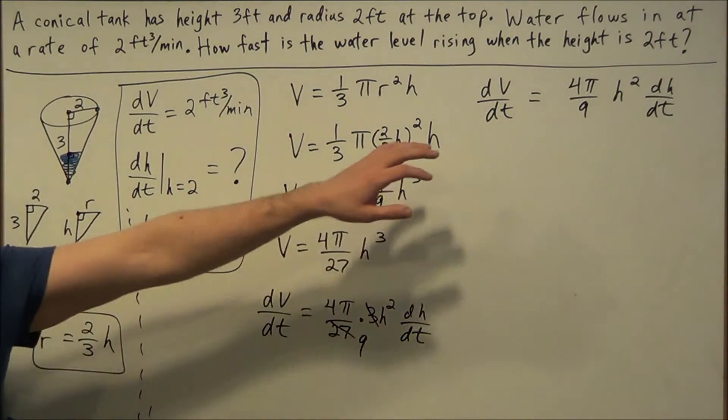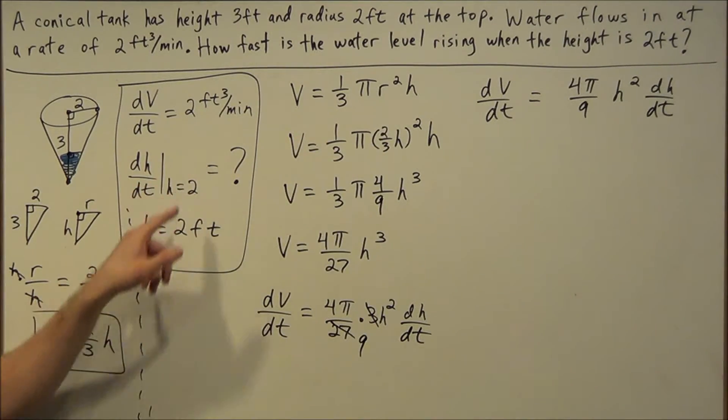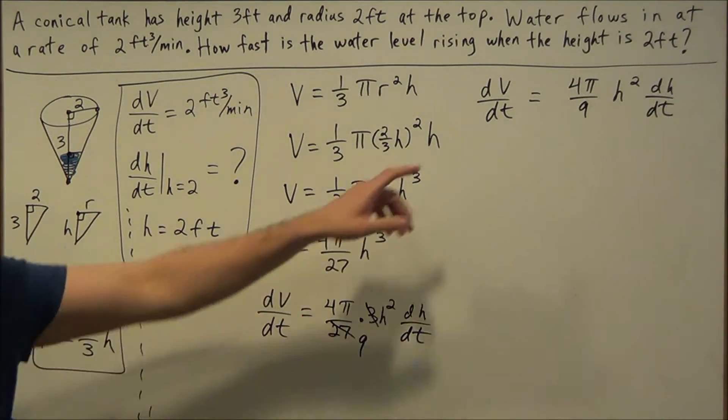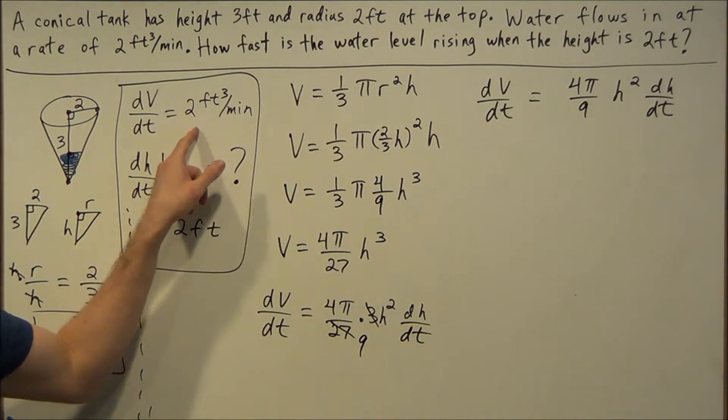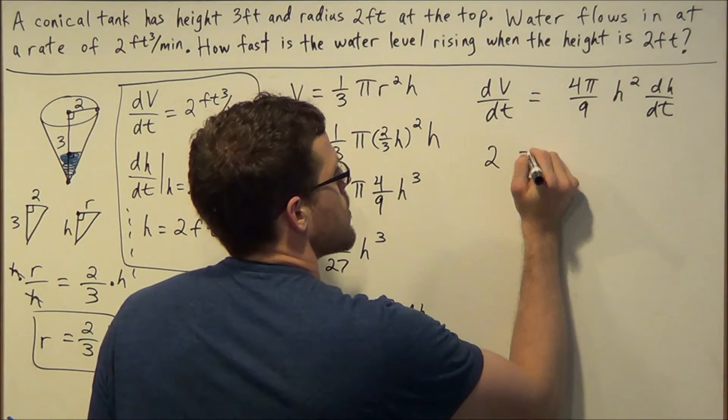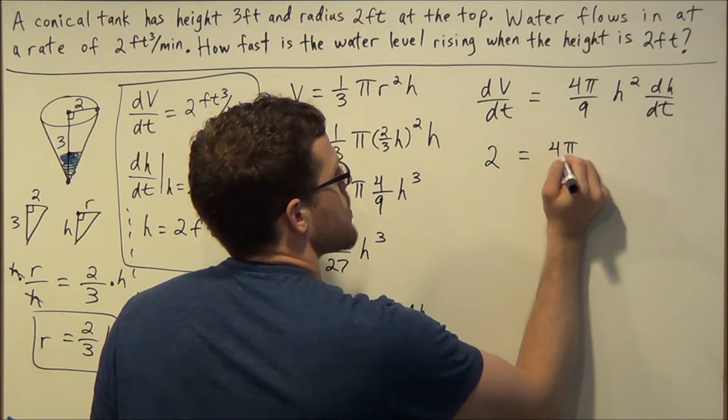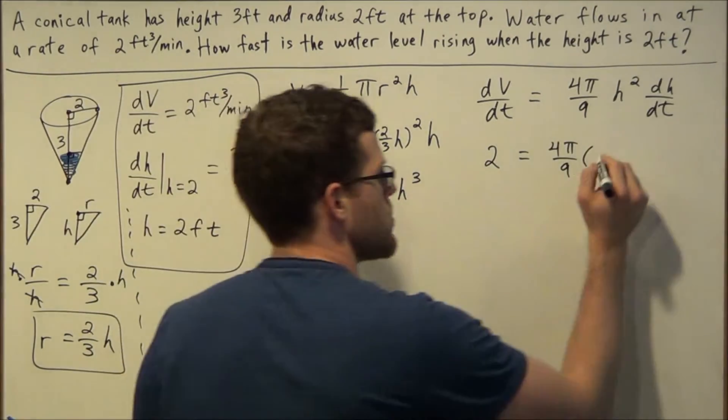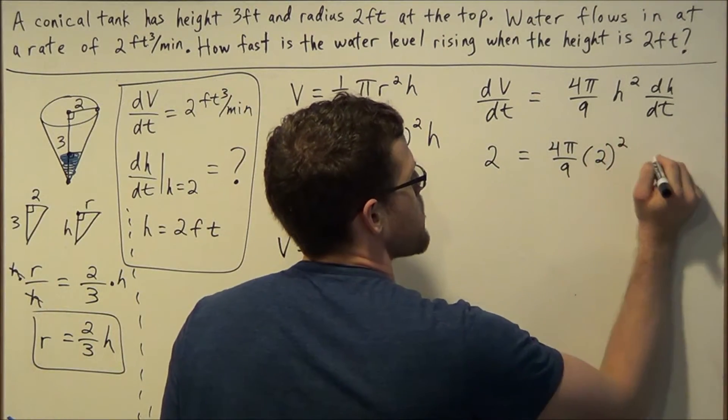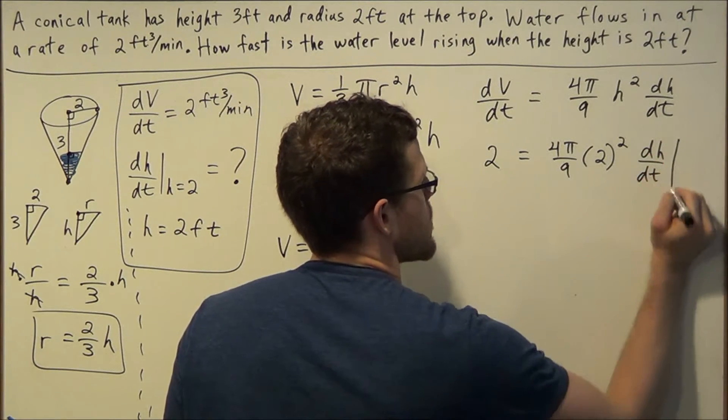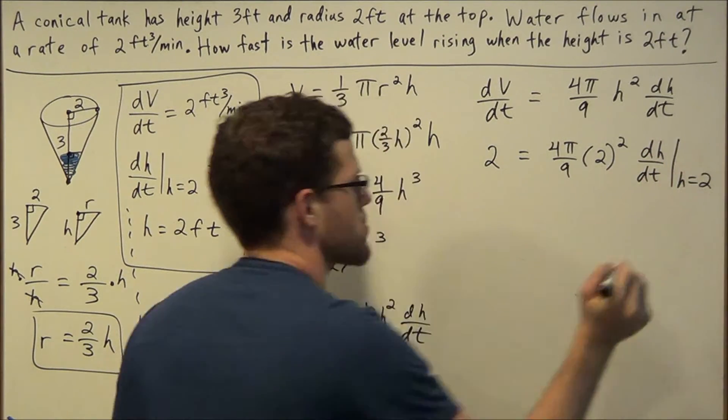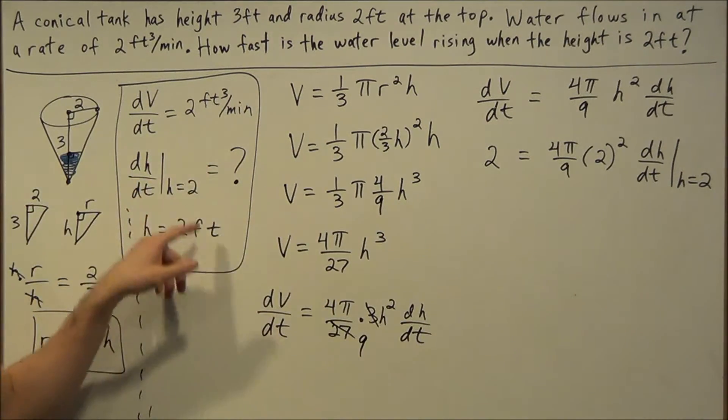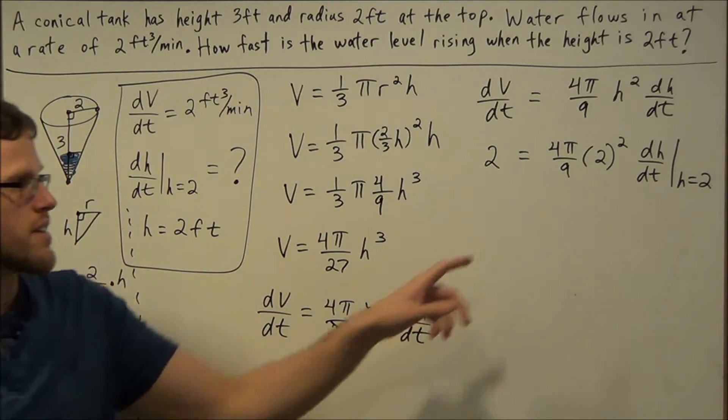At this step, now we're getting ready to solve this. All we have to do is just plug in the information that was given to us. We're going to wait to the end to write all the units out just so everything doesn't get cluttered. So dV/dt we could replace with 2. We'll have (4π/9), h is equal to 2 feet, so we're going to replace h with 2, and we'll have 2 squared. This is dh/dt evaluated at h equals 2. Now we'll introduce this vertical bar because now we're plugging in 2, and we're plugging in all the information based on what's happening when the water level is at 2 feet.